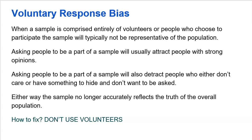Asking people to volunteer will typically attract people with really strong opinions, and will detract people who either don't care or have something to hide. For example, if I said I'm going to do a survey on vaping and ask who wants to volunteer — most likely, the person who says no problem is somebody who doesn't vape. If you do vape, you're probably going to say I don't want to be part of that survey. That's volunteer response bias. Anytime you have something politically charged, allowing volunteers will get you the extreme sides. So how do you fix this? Simply don't ever use volunteers to compromise your survey.